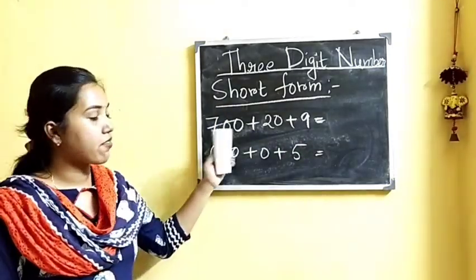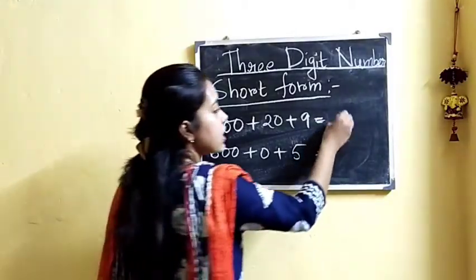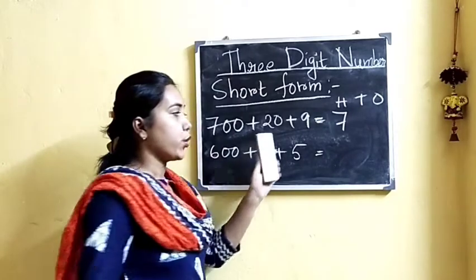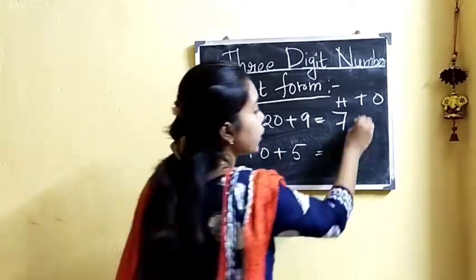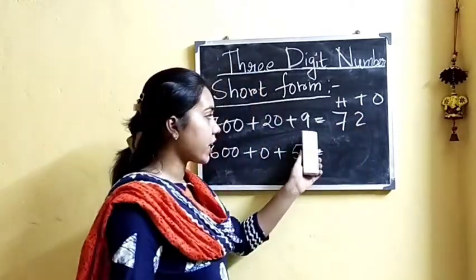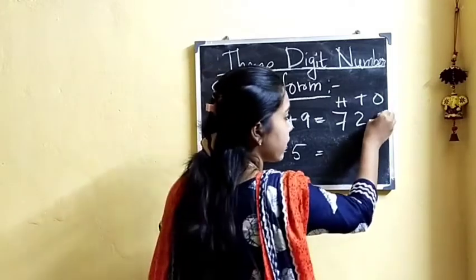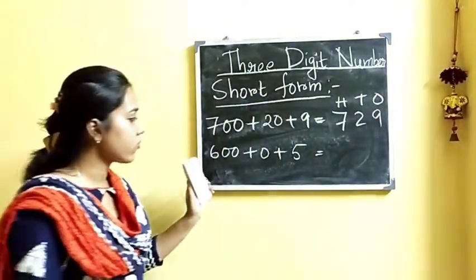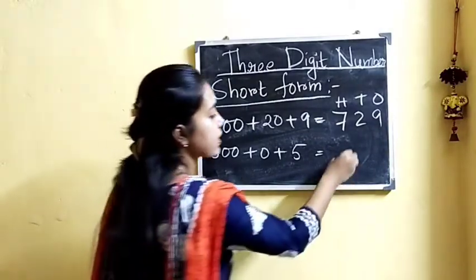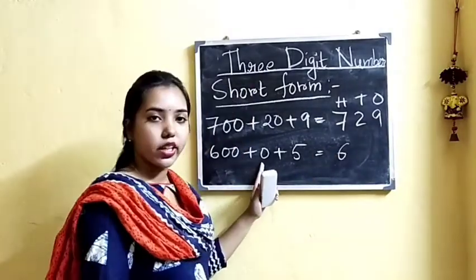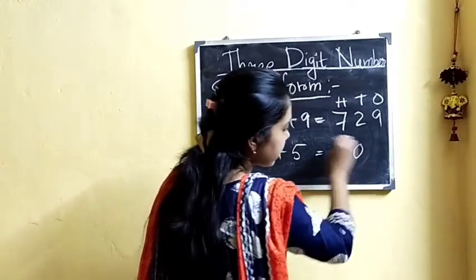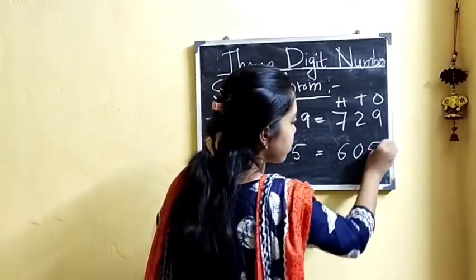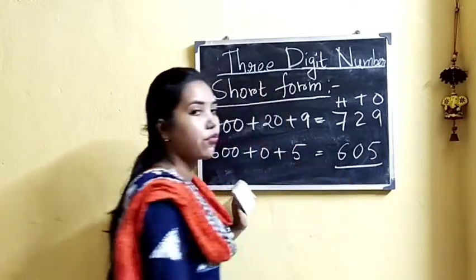Here we have 700, so we will write 7 in the hundreds place. 20, so we will write 2 in the tens place. And 9 means 9 ones, so we will write 9 in the ones place. Now for the last example: here we have 600, so we will write 6 in the hundreds place. 0 tens, so we put a 0 in the tens place. And 5 ones, so we write 5. So the number becomes 605.